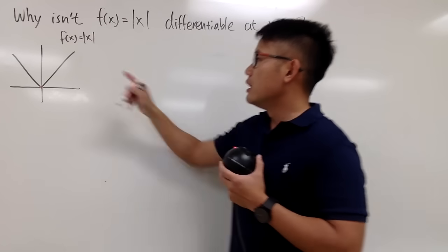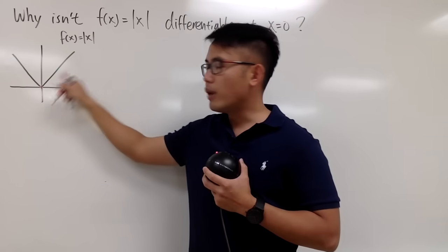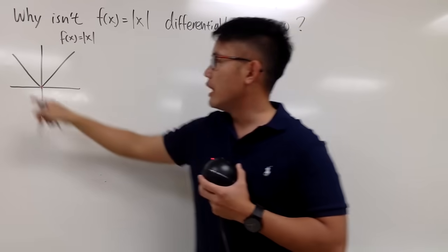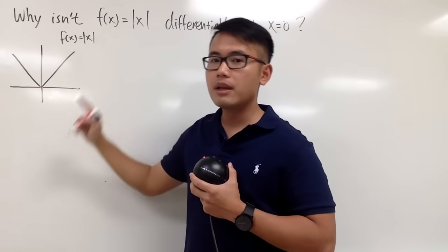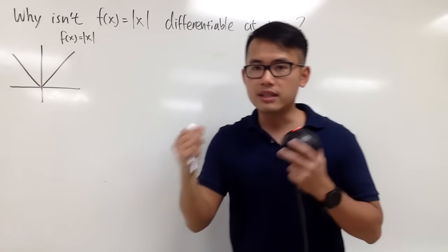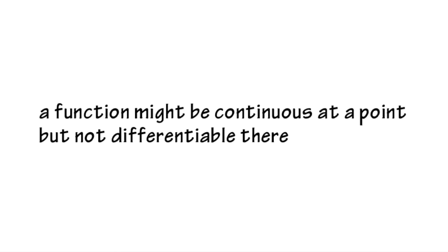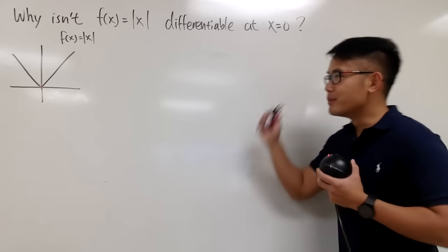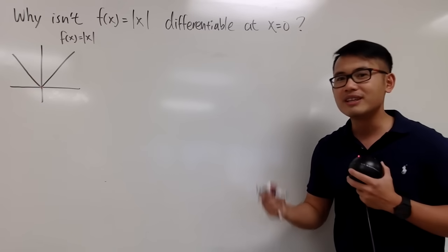Keep in mind, this function is continuous for all x values. We can plug in x equal to 0 right here, and you can just draw the curve like this. This is an example that a function is continuous, but not differentiable. I do want to show you guys how to prove this mathematically by using the definition, so let's do it.